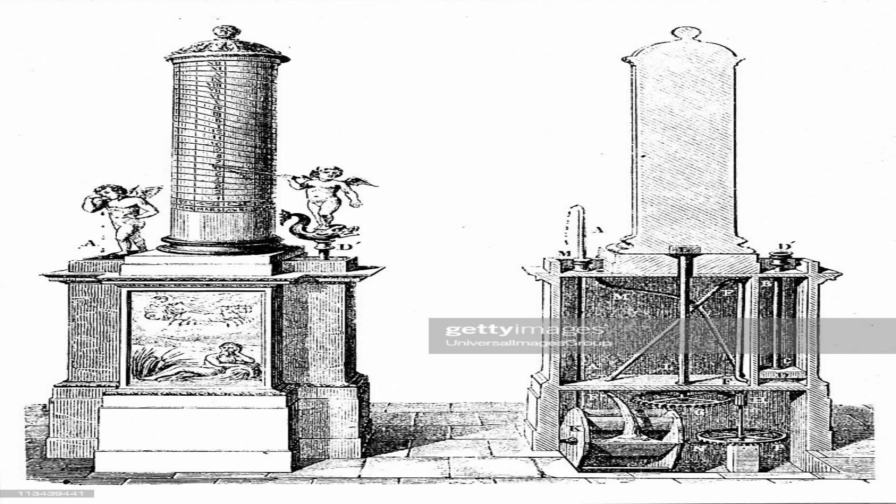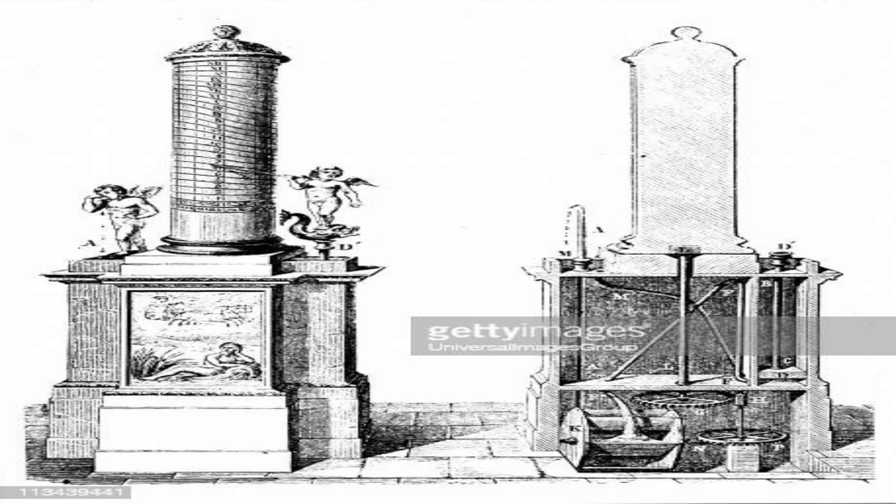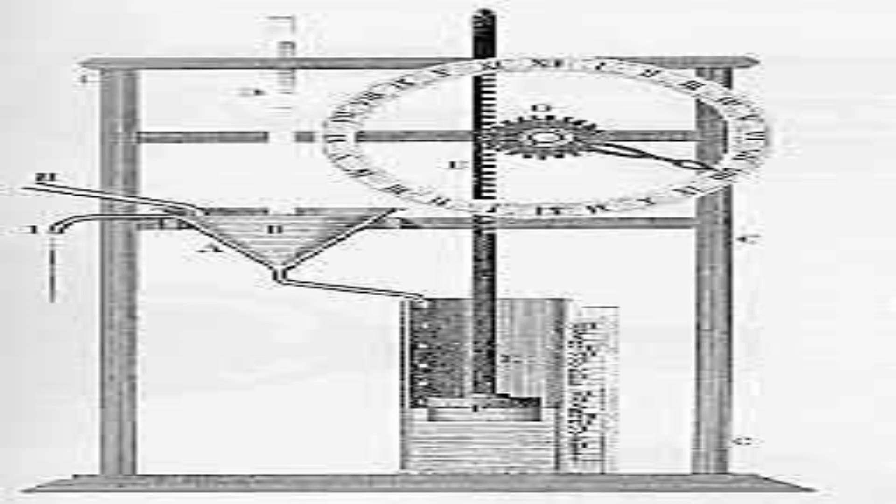Regardless of how much water was left in the reservoir or in the second tier, Ctesibius' float-type klepsidra was much more accurate and reliable than previous models. It could measure time for up to 24 hours without needing any adjustment or maintenance. It was also more versatile and adaptable, as it could be calibrated for different seasons or latitudes by changing the size of the hole or adjusting the scale on the wall.